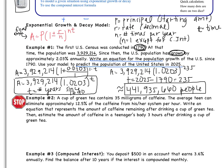So if we move a little bit, let's look at example two. It says a cup of green tea contains 35 milligrams of caffeine. The average teen can eliminate approximately 12.5% of the caffeine from his or her system per hour. Write an equation that represents the amount of caffeine remaining after drinking a cup of green tea. Then estimate the amount of caffeine in a teenager's body three hours after drinking a cup of green tea. As you can see, there's a stop sign. That means you need to pause the video and try this one on your own, please. Two things, you have to write an equation, then you have to estimate the amount of caffeine that's left. Pause the video, try both parts on your own, please, and then come back when you are finished. Good luck!